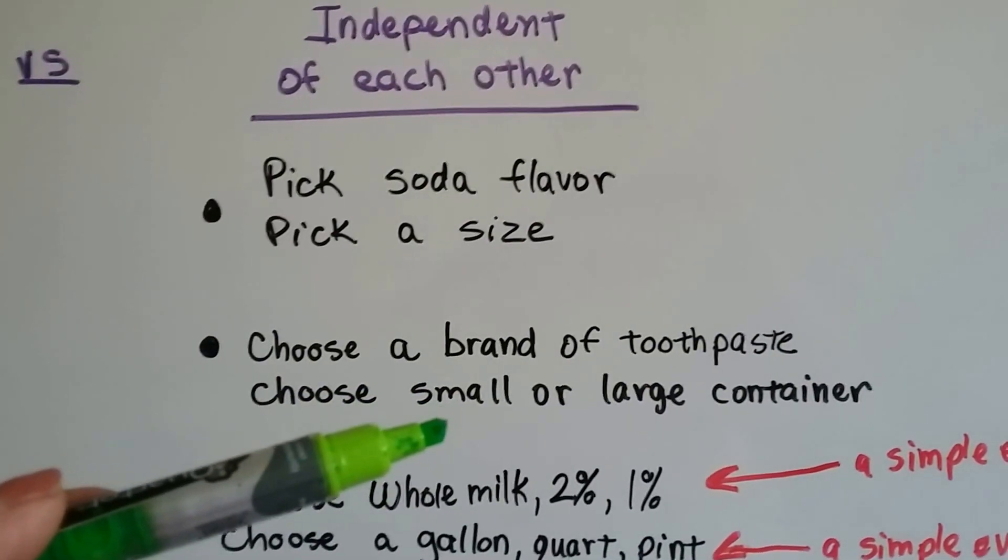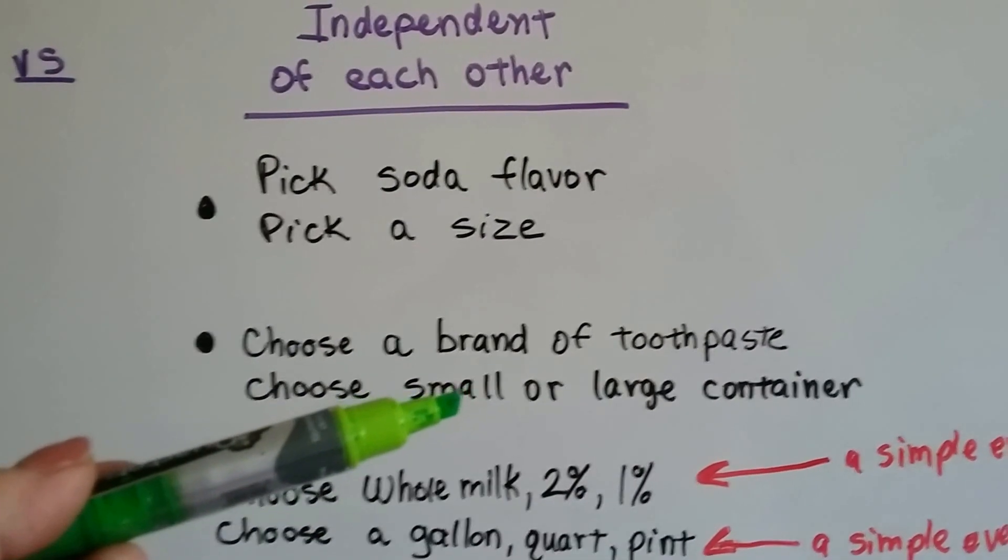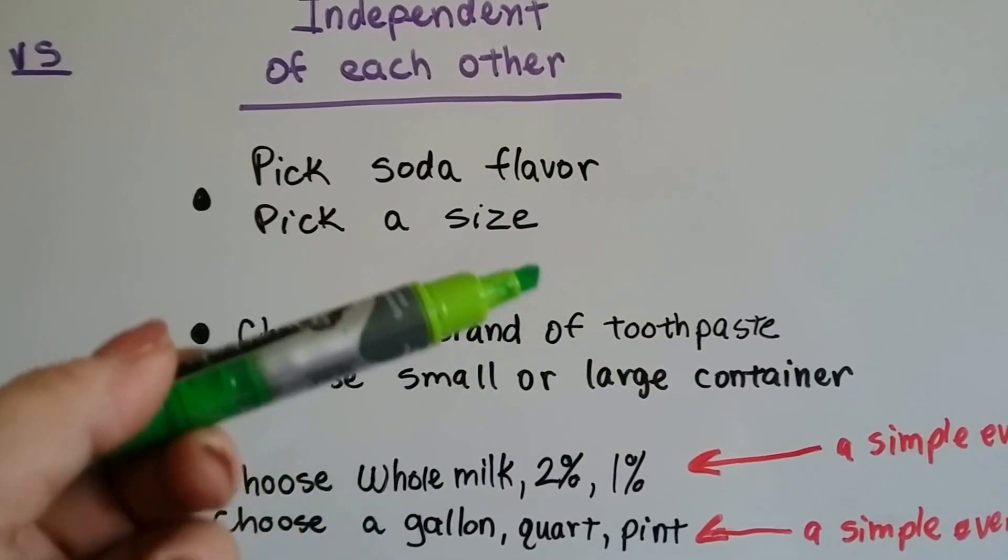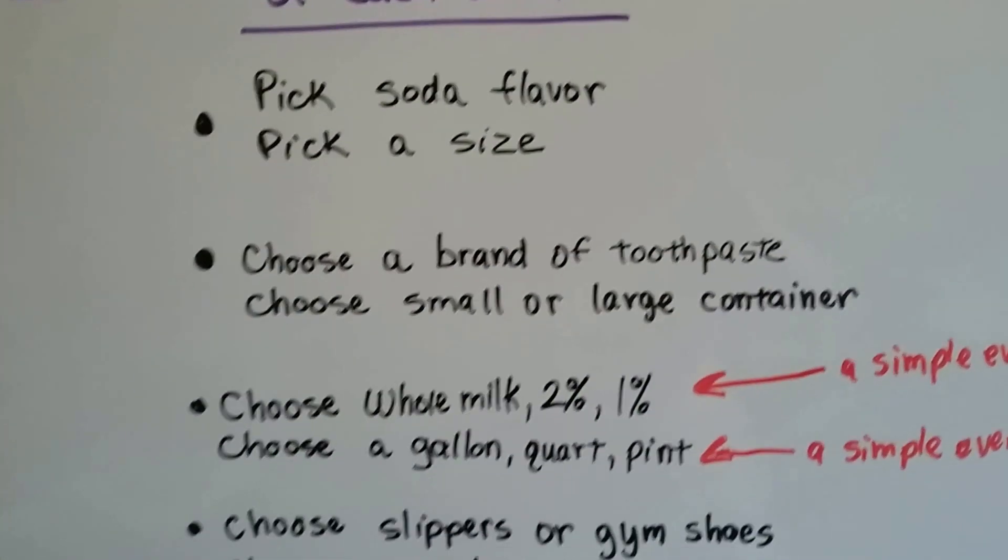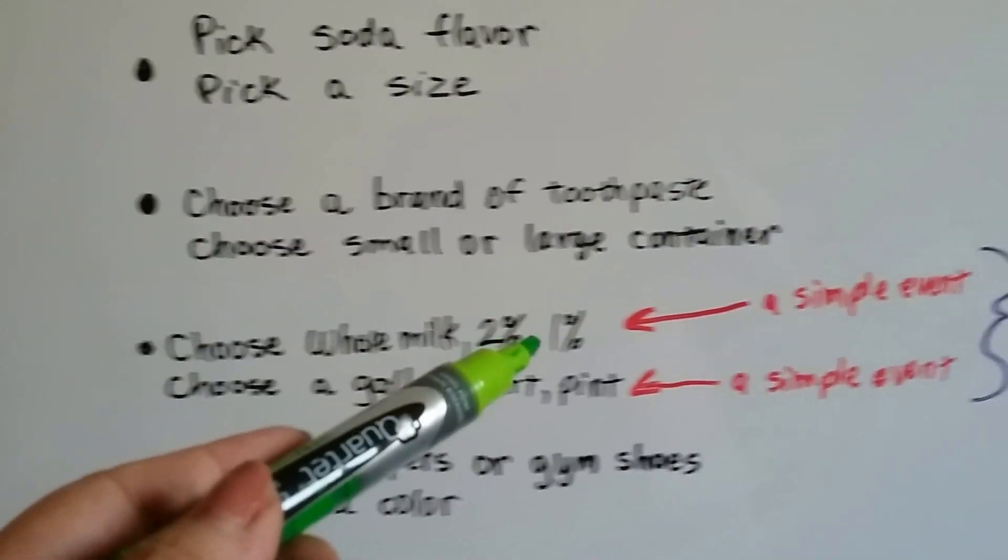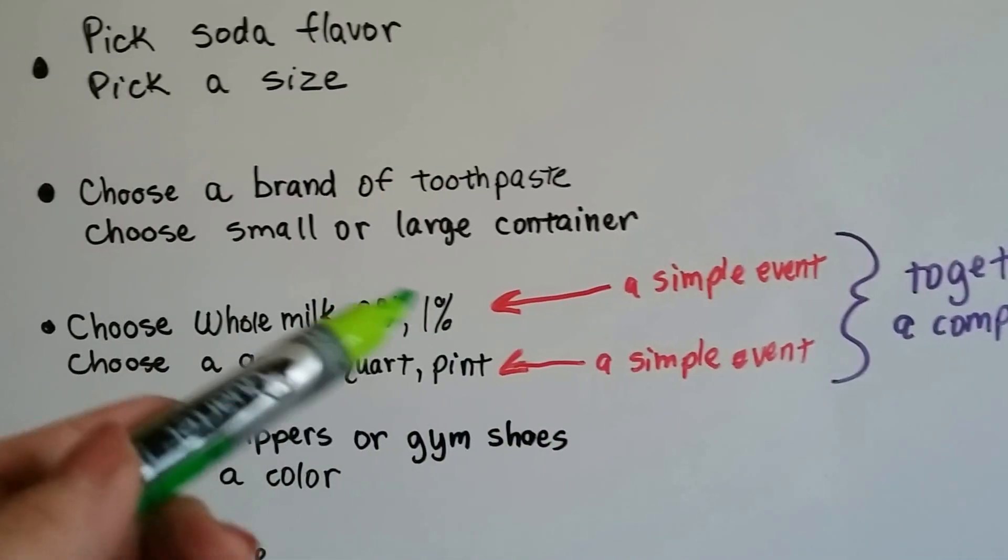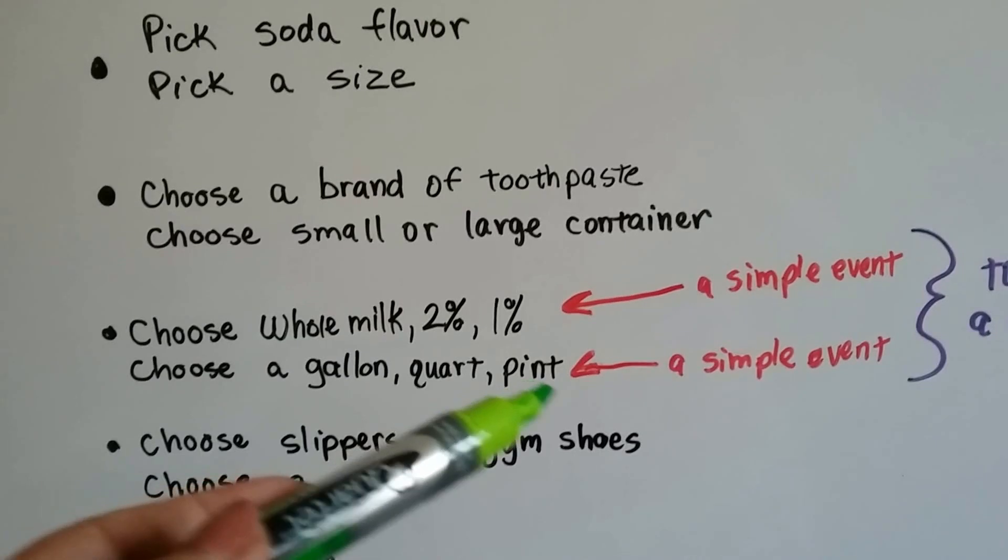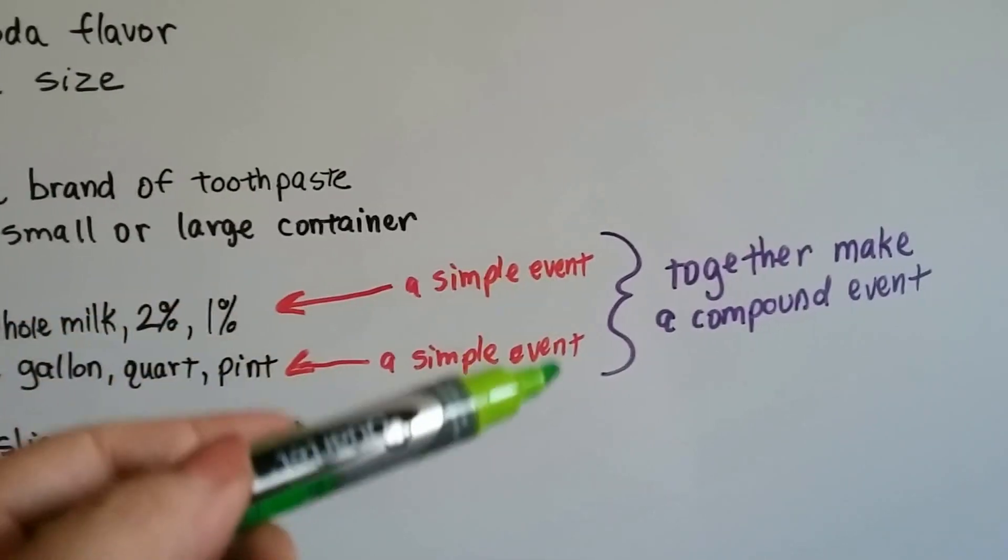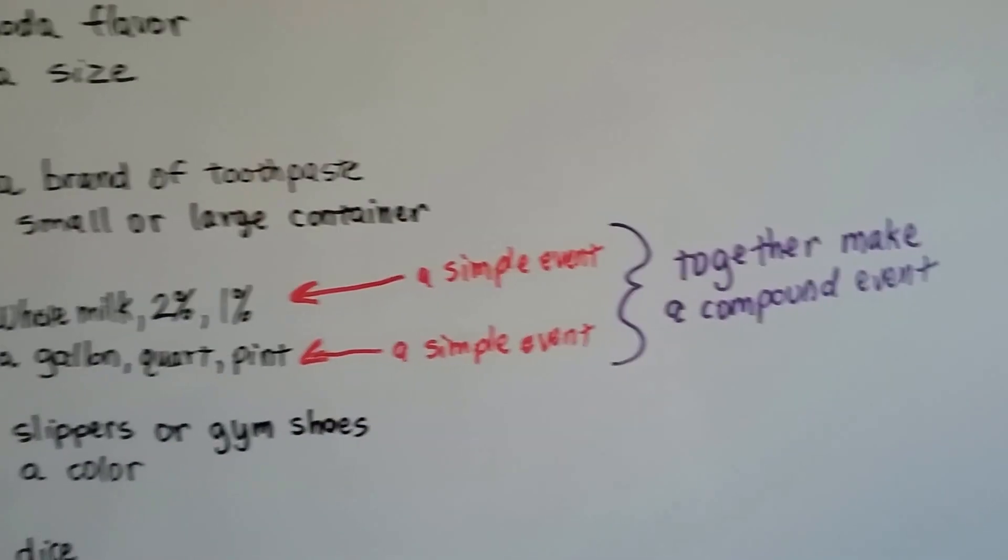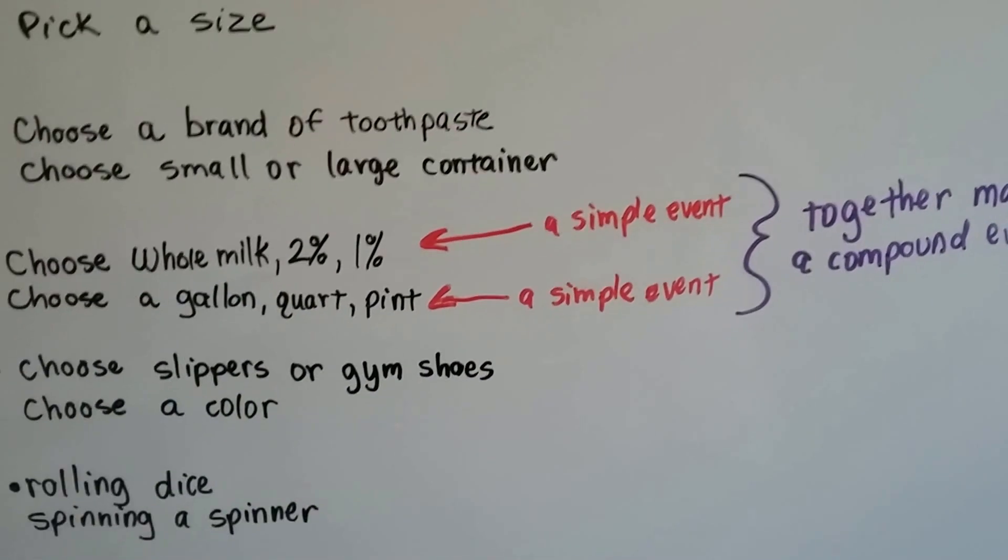How about I choose a brand of toothpaste? And then I choose a large tube or a small tube. That's got nothing to do with the brand. They all come in large or small. How about if I choose whole milk, 2%, or 1%? That's a simple event. But then I choose it to be in a gallon, a quart, or a pint. That's a simple event. These two simple events together make a compound event, that I chose whole milk in a gallon.